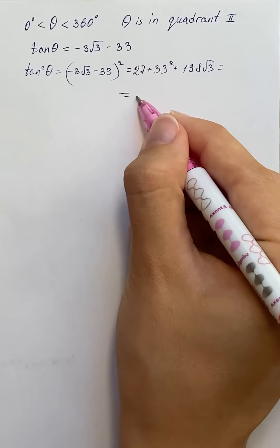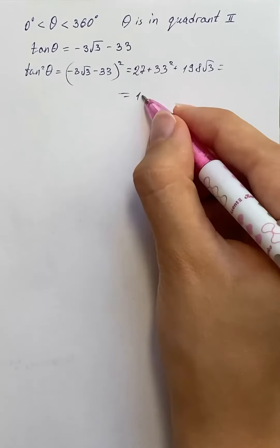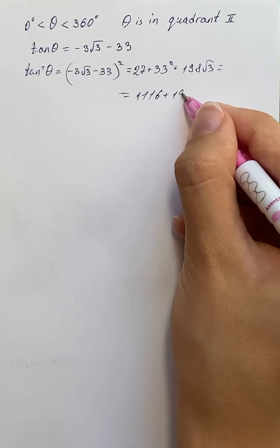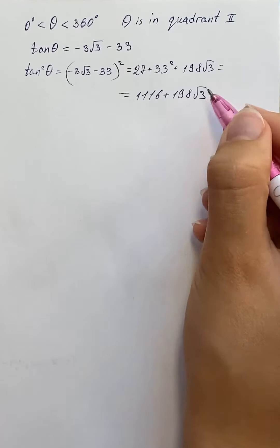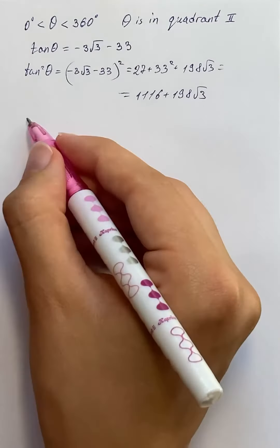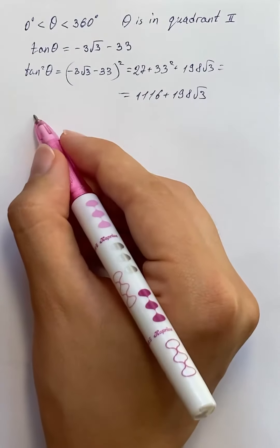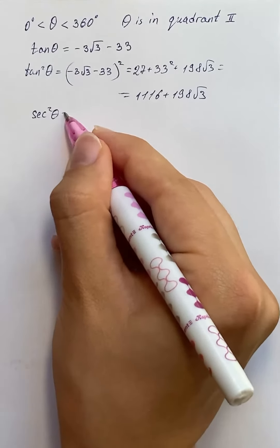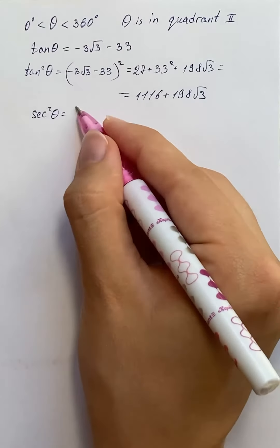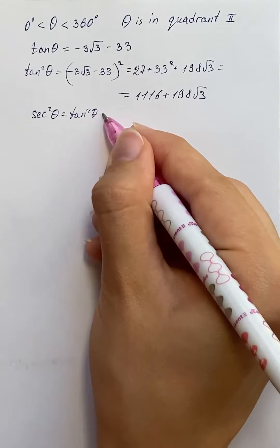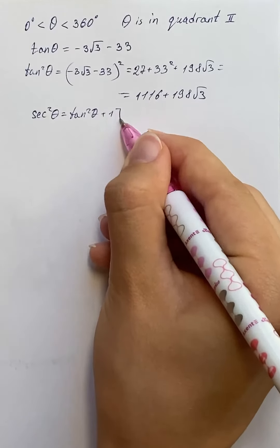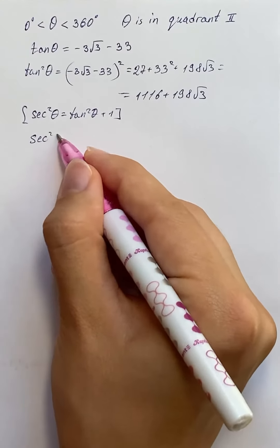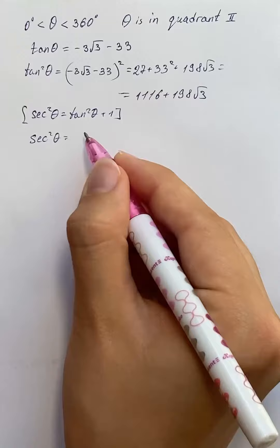That will be 1116 plus 198 square root of 3. We know the trig identity that sec squared theta equals tan squared theta plus 1.